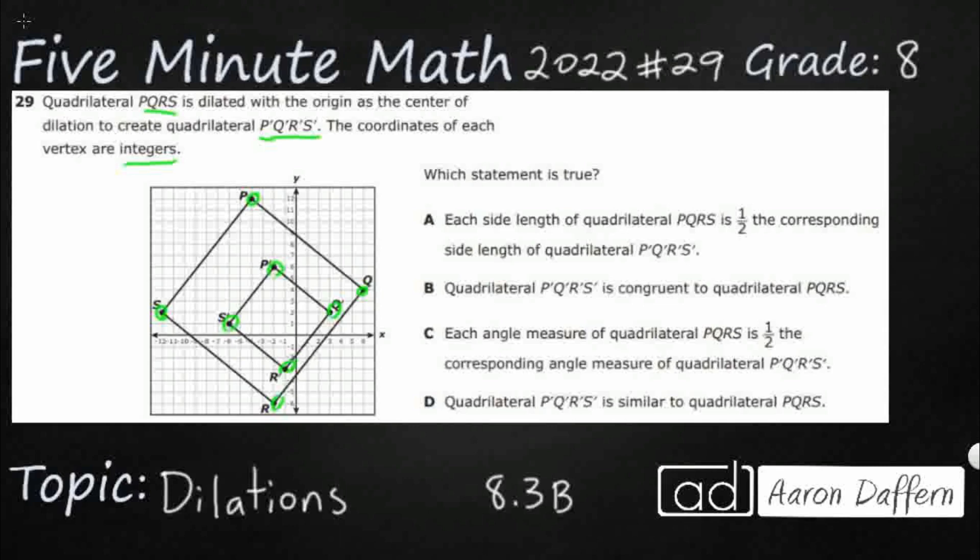All right, so which statement is true? Each side length of quadrilateral PQRS, so that's the big one. I'm going to just put 'big' for PQRS, just because that's a lot of P's Q's R's and S's. The only difference are these little tiny marks they've got right there. All right, so the big one is the PQRS, the small one is the P' Q' R' S'. So each side length of quadrilateral PQRS, the big one, is one-half the corresponding side length of the small one, the prime one. The big, each side of the big is half of the small. No, no, that's opposite. If these two were switched, maybe.